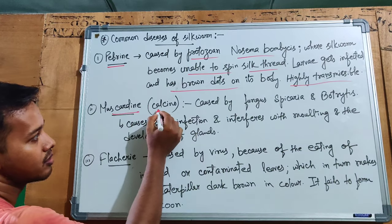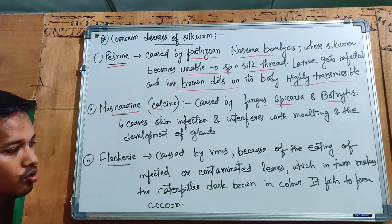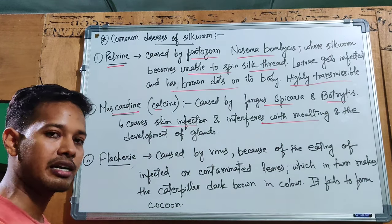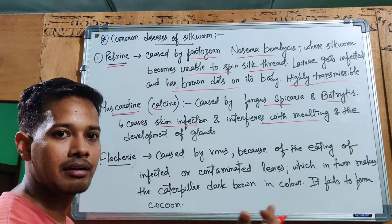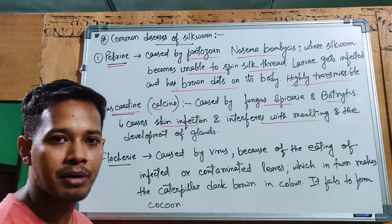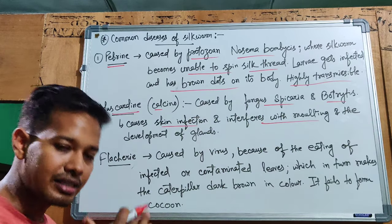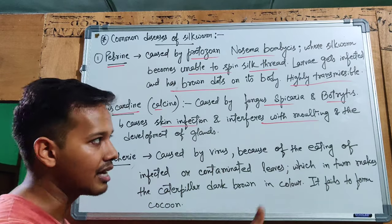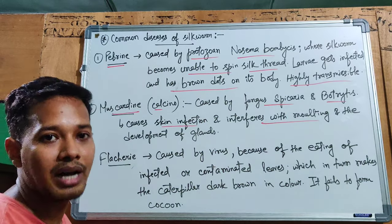The second disease is Muscardine, also called Calcino, caused by the fungus Beauveria bassiana. It is a skin infection that interferes with molting. If molting is disrupted, the silk glands — which develop after the fourth molting — do not form properly, and the larva cannot produce silk.